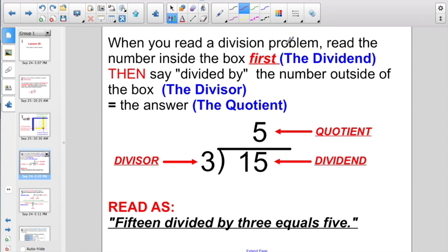When you read a division problem, you read the number inside the division box first, which is known as the dividend. Then you say, divided by, the number outside the box, which is called the divisor, equals the answer, which is known as the quotient. You would read this problem as 15 divided by 3 equals 5. Again, 15 is the dividend, the number we say first. 3 is the divisor. 5 is the answer, otherwise known as the quotient.